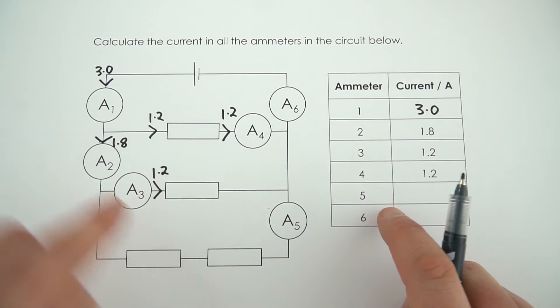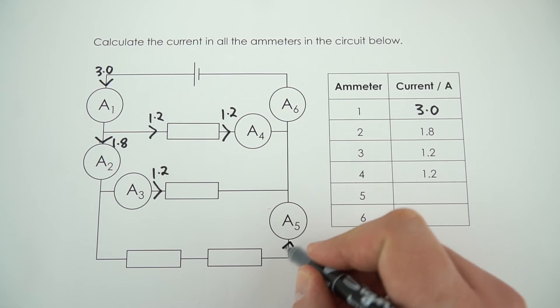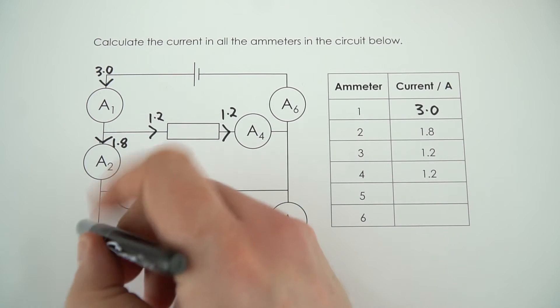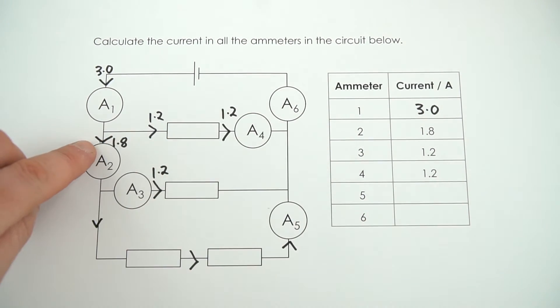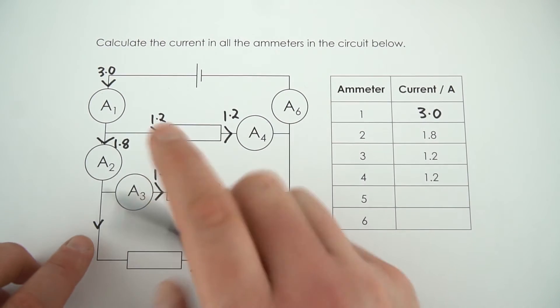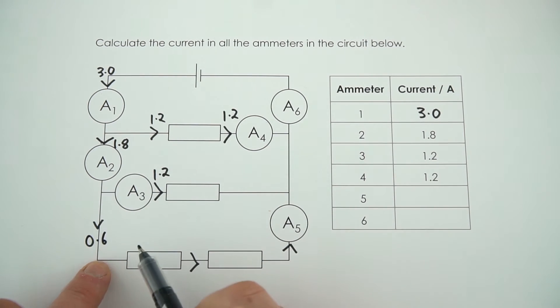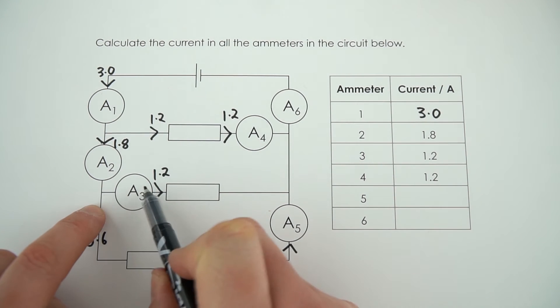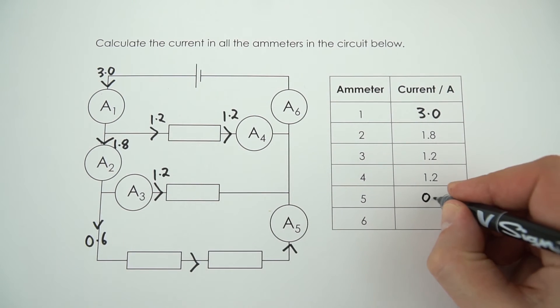For ammeter 5, you're going to have the same current here as between the resistors and at this point on the circuit. This current flows down here, 1.2 goes that way, we had 1.8, and that means whatever's left is going to be equal to 0.6. So you've got 0.6 going here, 1.2 there from that 1.8, so number 5 is 0.6.